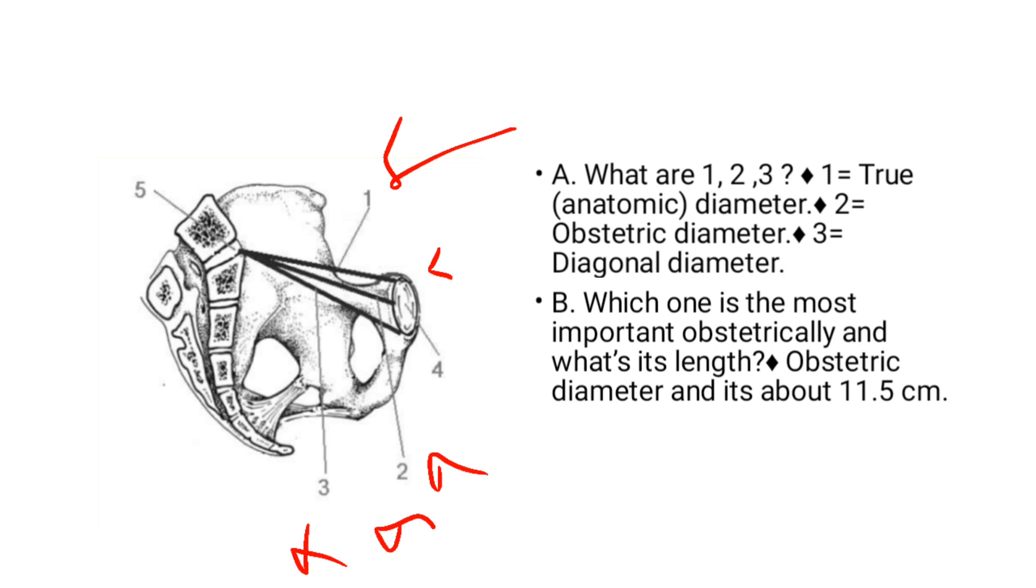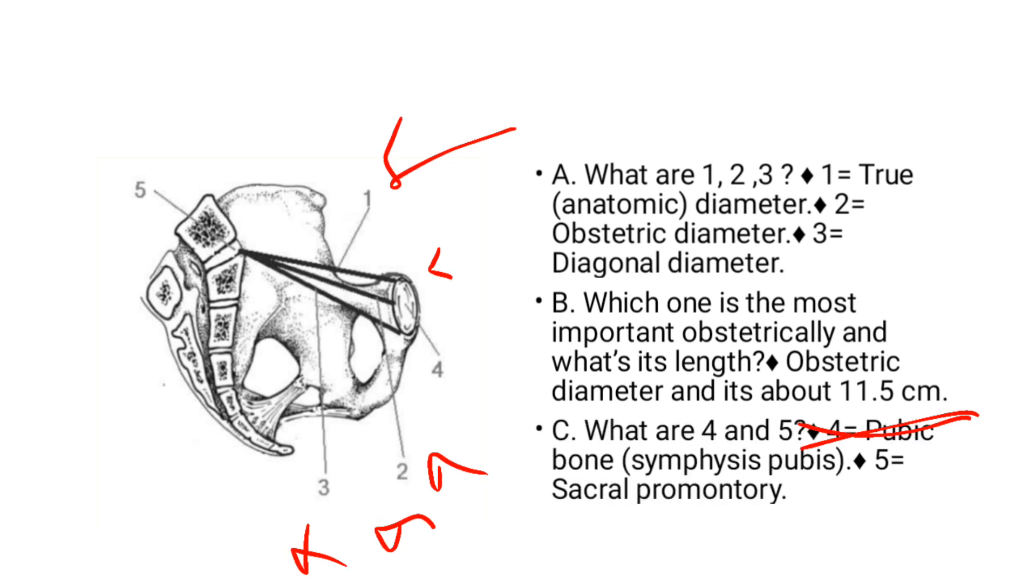Then the next question: which one is the most important obstetrically? The obstetric diameter is the one which is important, which is number 2. The obstetric diameter measures about 11.5 cm.